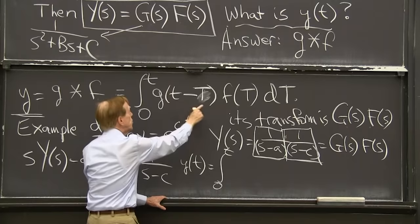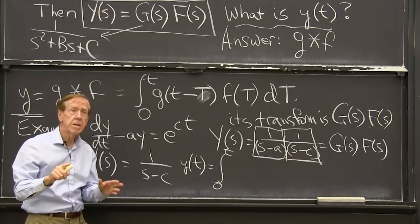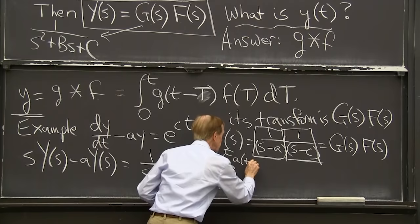What do I have? g(t minus T). What is the inverse transform of 1 over s minus a? It's e to the a(t minus T).